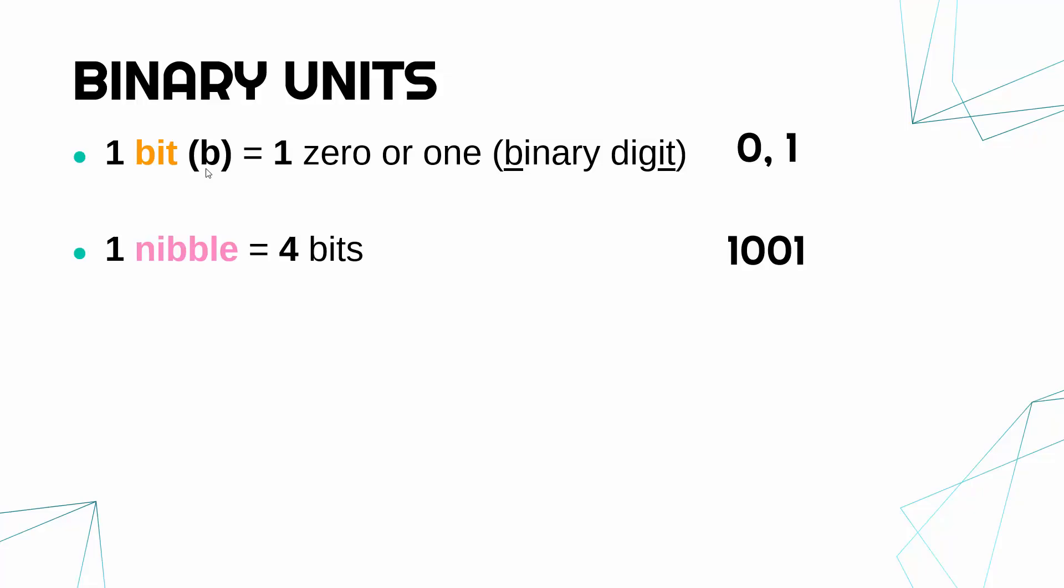Now the next proper one is a byte. Make sure the spelling is B-Y-T-E, not B-I-T-E as nibble and byte might suggest. So one byte, with a capital B as its shorthand, is eight bits or two nibbles. You can see why nibble is used—a nibble being a small byte.